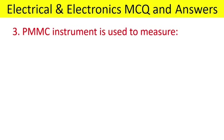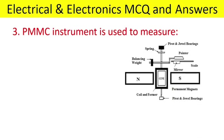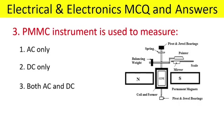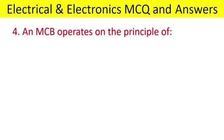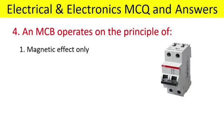PMMC permanent magnet measuring instrument is used to measure: AC only, DC only, both AC and DC. Answer: DC only.